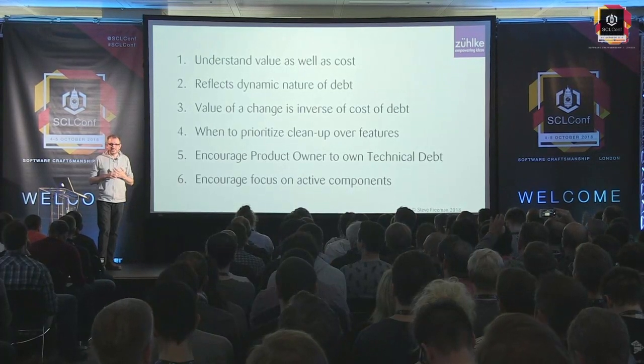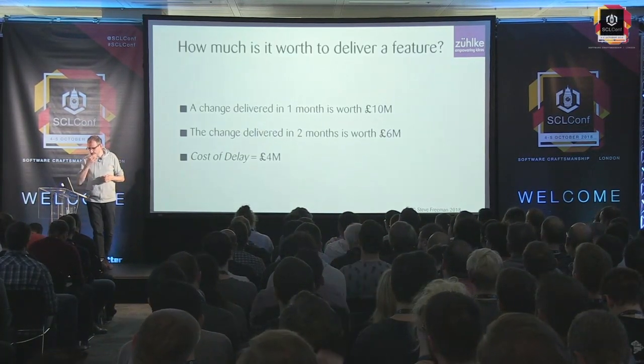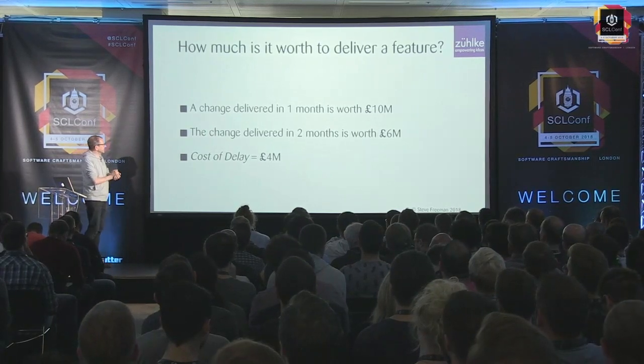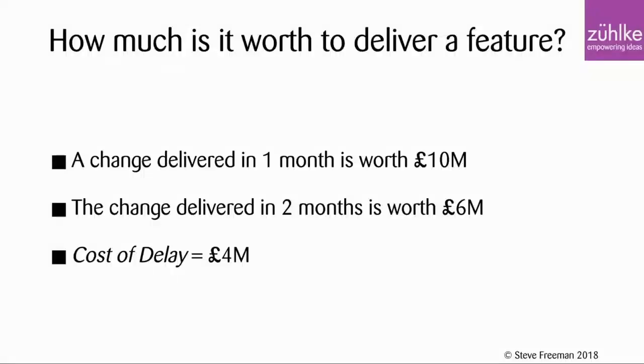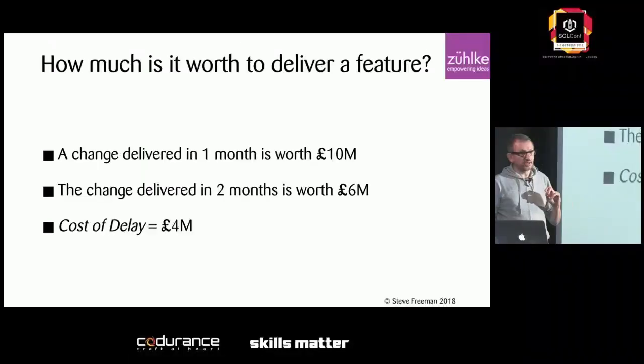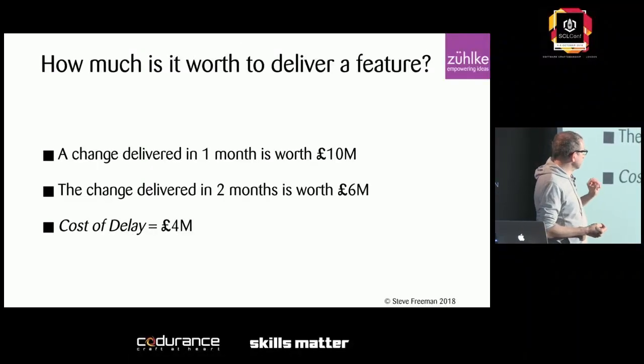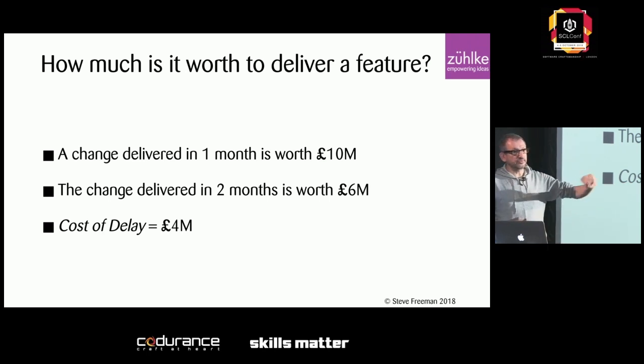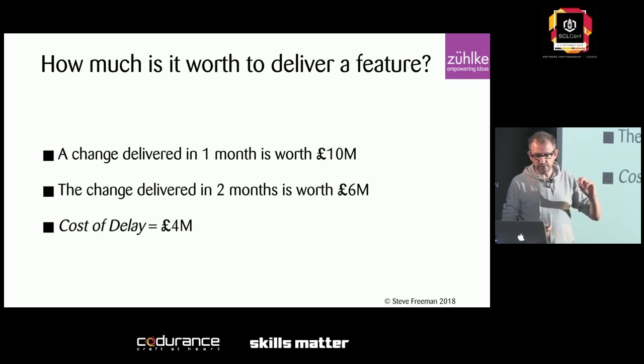First, a little terminology. How many people are familiar with cost of delay? It comes from Don Reinertson. Imagine you've got this change you want to make. If you do it in a month's time, it's worth 10 million quid. If it takes two months to do, you've lost a month in the middle and it's only worth 6 million quid. So your cost of delay is 4 million quid. It continues to astonish me how many organizations don't think about the cost of waiting to achieve something.